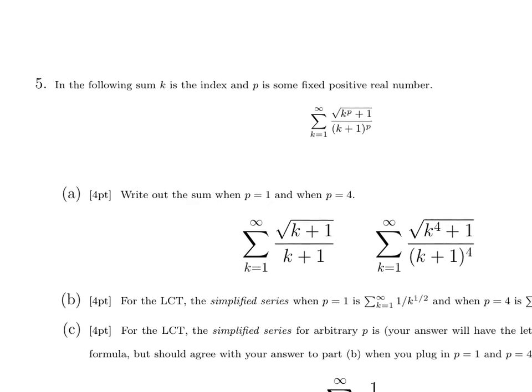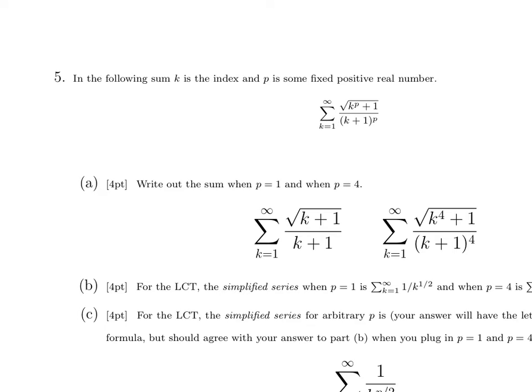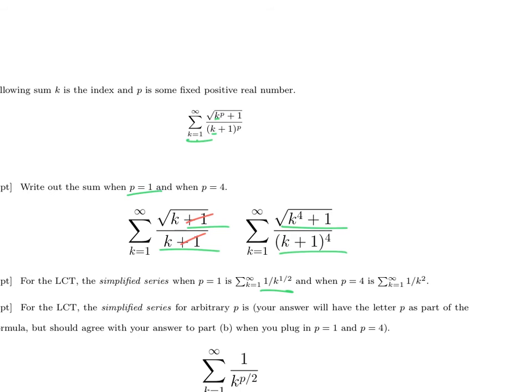And finally, here is a complex expression that depends not only on the index k, which we're summing over, but an additional parameter p, positive real number. When p equals 1, we get the square root of k to the 1 over k to the 1 plus 1. When p equals 4, we get the square root of k to the 4 plus 1 over (k+1) to the 4th. What does the simplified series look like for each of those? Well here, we get rid of the plus 1 and the plus 1, we get square root of k over k, which is the same as 1 over square root of k, or 1 over k to the 1 half. When p equals 4, we get rid of the plus 1 and the plus 1, so we've got the square root of k to the 4th on the top, which is k squared, and k to the 4th on the bottom, so we end up with 1 over k squared.